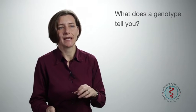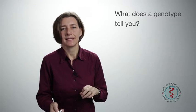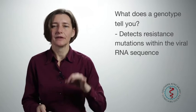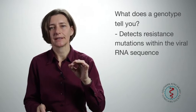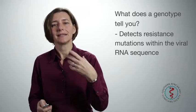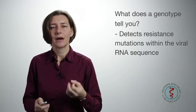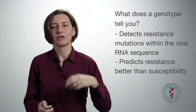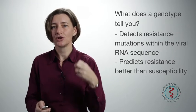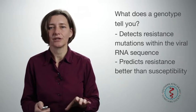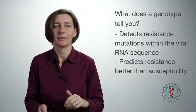What does a genotype actually tell you? It detects resistance mutations within the viral RNA, and if you know what those resistant mutations mean — for example, an M184V means resistance to 3TC — that is a very useful thing to know. However, it does predict resistance better than susceptibility. If the resistance mutation is there, you know that it's there. If it is not there, you do not know that it's not sitting in a small percentage of the virus that hasn't actually been picked up by the genotype.